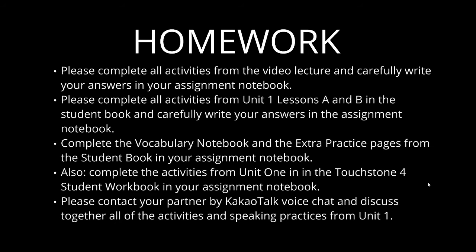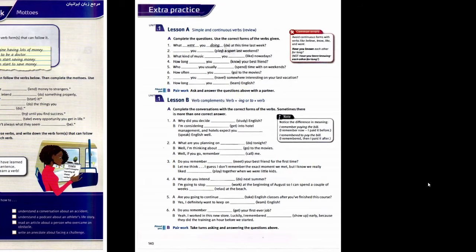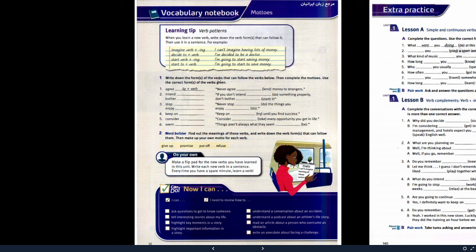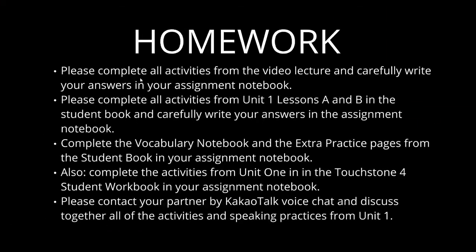Please complete all activities from the video lecture and carefully write your answers in your assignment notebook. Please complete all activities from Unit 1 Lessons A and B in the student book and carefully write your answers in the assignment notebook. Complete the vocabulary notebook and the extra practice pages from the student book in your assignment notebook. This is the vocabulary notebook page — you just need to do the top part. And this is the extra practice pages from the book for Unit 1 — complete these, write down the answers and the full sentences. Don't just write down the answer — write down the whole sentence. I know it's a little bit extra work, but it's good for you.